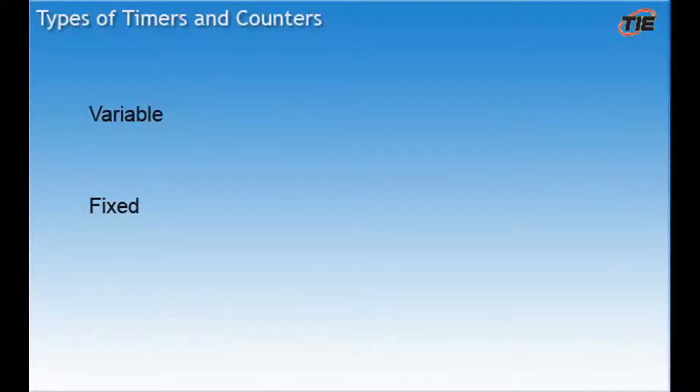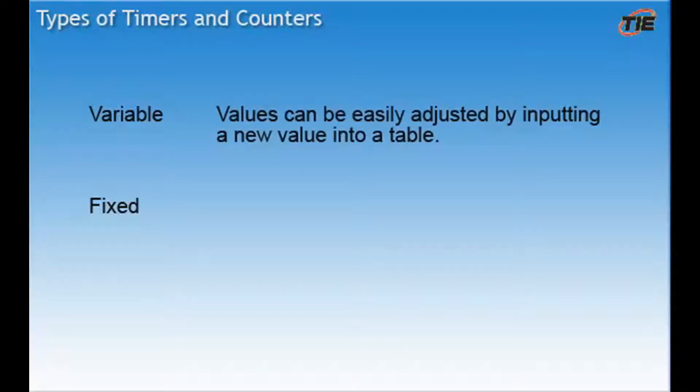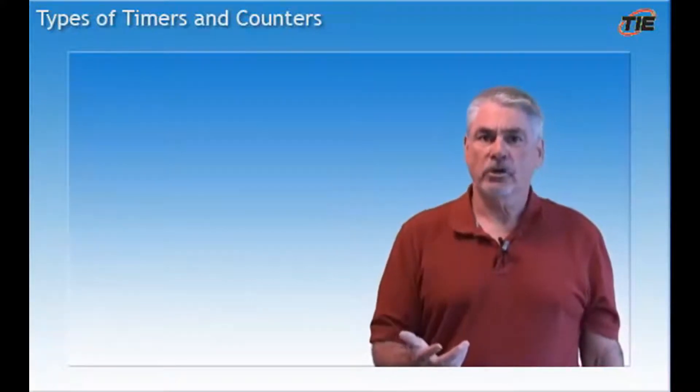There are basically two types of timers and counters used on the FANUC controls. These are variable and fixed. Variable means that you can easily adjust the values. This is done by going to the timer or counter screens and inputting a new value. Fixed means that the timer or counter value is hard-coded into the ladder. In order to adjust these you will need to edit the ladder.